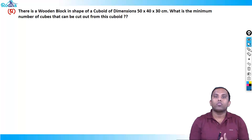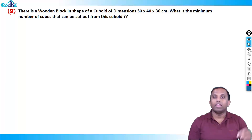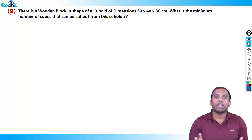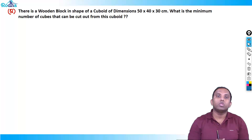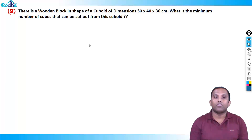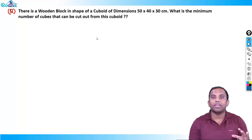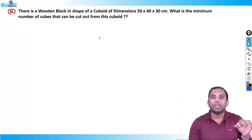Cubes and cube voids were quite favourite topics in the CAT exam. In previous CATs there were many questions on cubes and cube voids, in the form of LRDI sets and single quant questions. But in the last two years — CAT 2016 and CAT 2017 — there were no questions on cubes and cube voids. So we really expect that in CAT 2018 and CAT 2019 we'll get questions on cubes and cube voids. It's a very high chance that this kind of question will come. This is a very good set to understand cubes and cube voids — a typical CAT level LRDI set that tests how quickly you can understand the concept and apply it.